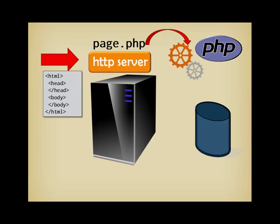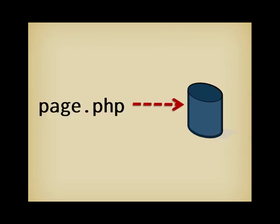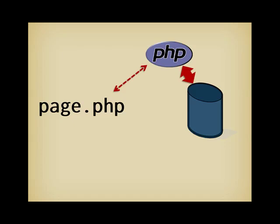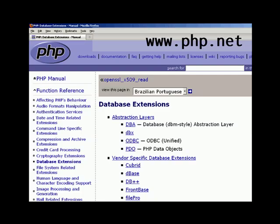If a database is involved, every independent PHP page must connect explicitly to a database because it's an independent program. However, as it connects through the PHP engine that often runs in the HTTP server, it's usually possible to have the PHP engine maintain permanent connections that save significant overhead. There are several sets of functions to connect to a database. Some of them are generic, abstract layers. Most are specific to a database.